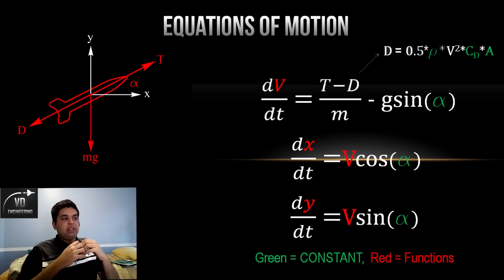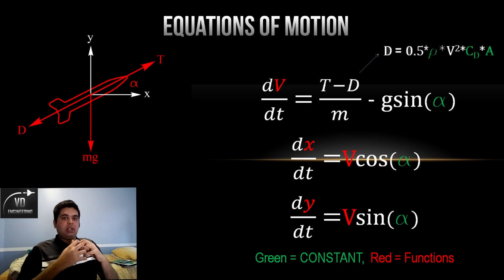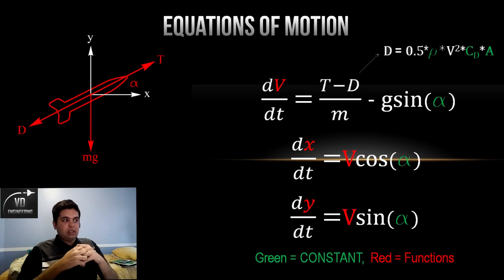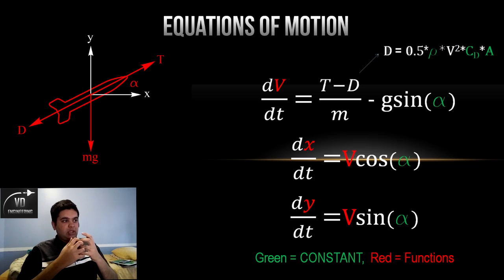The forces can be seen here on this slide. One of them is the engine force, which is imported from Excel, so it is discrete. The drag force is simply one-half times density times velocity squared times area times the drag coefficient of the vehicle. We will assume that everything except velocity is constant, just to keep things simple. Let's jump now into MATLAB and I will show you guys how to do this step by step.